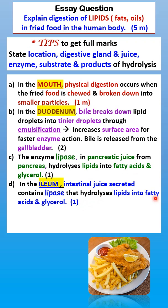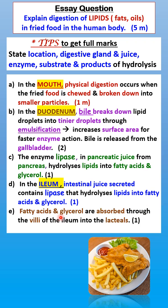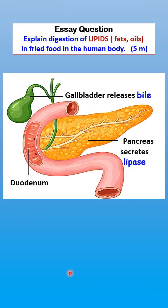As an extra point: fatty acids and glycerol are then absorbed through the villi of the ileum into the lacteals, which are part of the lymphatic system. From the lymphatic system, the lipids are then brought into the blood circulatory system. This covers the parts of the digestive system involved in the digestion of lipids.